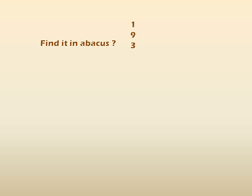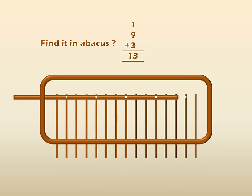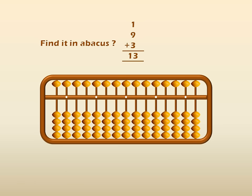In this way, we have to find out the solution in the abacus frame. So, now again we are going to see another problem. Find it in abacus. Here the problem is 1, 9 and 3. We have to add these 3. And by adding these 3, we get 13. So, now we have to find out this answer in the abacus frame. This is the abacus frame. And now, these are the beads. Now, first take 1. So, in the 1's place, move 1 bead up to the answering bar. So, 1 bead is moved up.